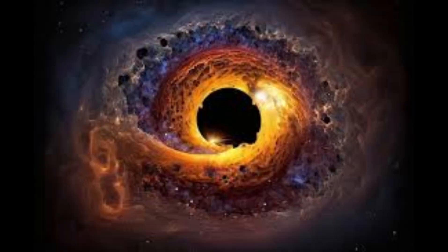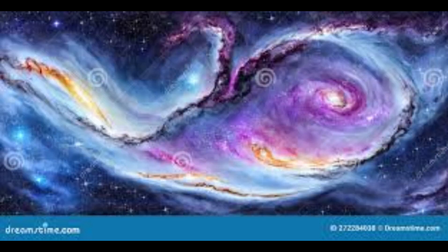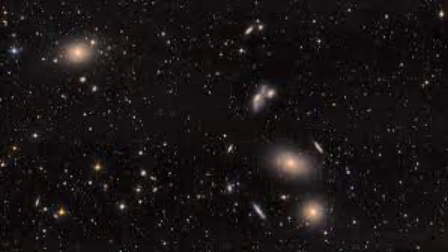Outer space is often described as a vacuum, but what does that really mean? In the vacuum of space, the density of matter is incredibly low, with vast regions of the cosmos containing only a few particles per cubic meter. These space regions are so empty that even light can travel for billions of light years without encountering any significant obstacles. This absence of matter is one of the distinctive features of space vacuum.